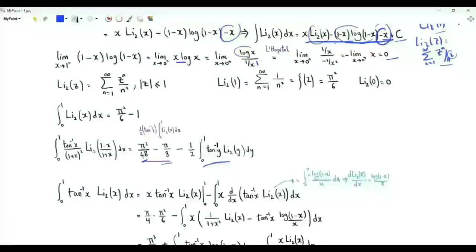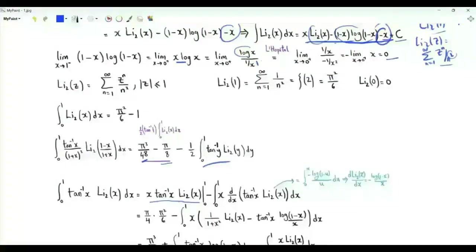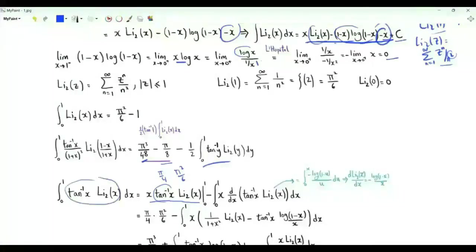We now focus on the integral where the integrand is the product of the inverse tangent and the dilogarithm functions. The first step is integration by parts. When x is 0, this function equals 0. When x is 1, we get pi over 4 times pi squared over 6. We also obtain minus the integral from 0 to 1 of x times the derivative of this product with respect to x.